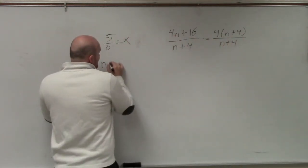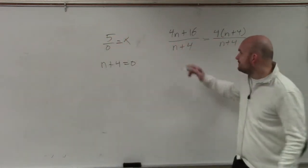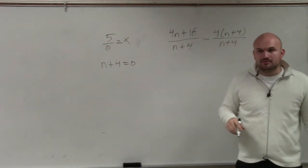So therefore, I take my denominator and I say n plus 4 equals 0. What value would make my denominator equal to 0? Negative 4.